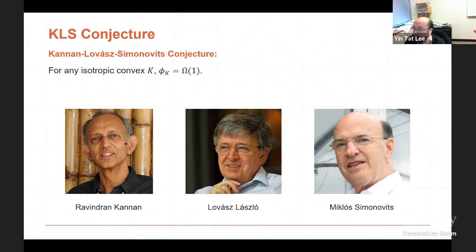If you put in step size 1/√n into the previous formula, you get this running time: to sample a point inside an isotropic convex set, it takes n² / ψ² steps. If the set is already isotropic, the only thing we need to study is the Cheeger constant. But in terms of the algorithm, the most difficult part is making the set isotropic.